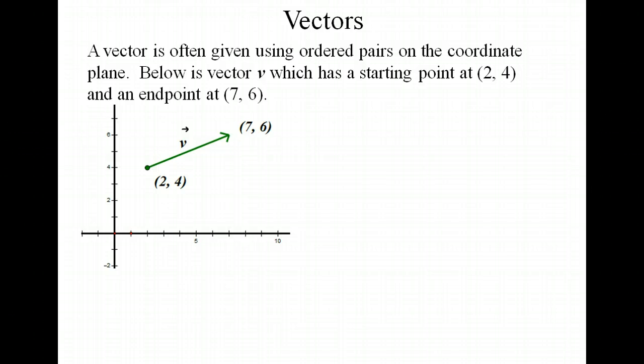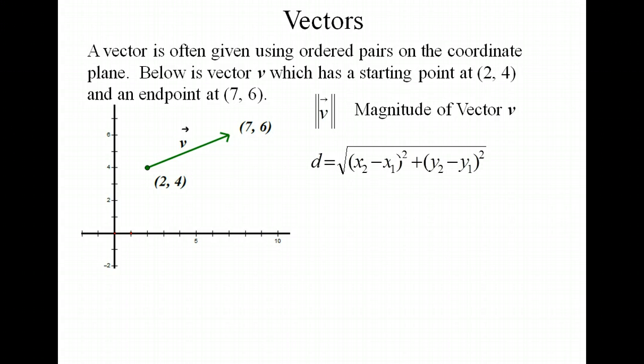I've drawn a vector V that has a starting point at 2,4 and an end point at 7,6. It's showing both magnitude and direction. We can find the magnitude of the vector pretty easily when it's given on the coordinate plane by just using the distance formula. So our difference between our x values is 7 minus 2. Our two y values are 6 and 4. So simplifying this we get the square root of 29. That gives us our magnitude, how long the line segment is.